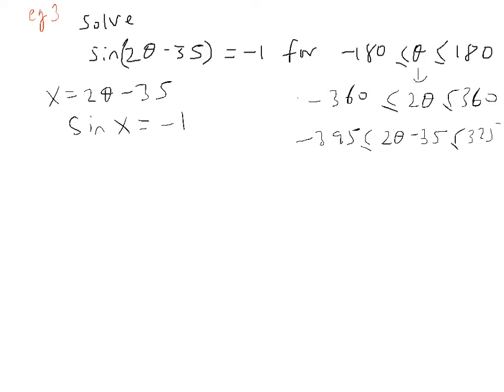So we've simplified the problem by introducing x and also therefore by changing our limits. So you can write x is greater than or equal to minus 395 or less than or equal to 325. Now if we put this in a calculator, our principal value of x will give us minus 90. 180 minus minus 90 will also give us another value of 270. If I add or subtract 360 to either one of these I'll go outside my range of values. So both of these values should be fine.